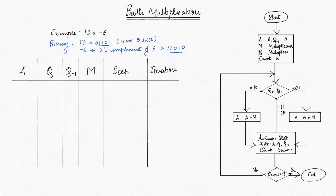The process of Booth's algorithm is represented in iterations, which is shown in a table. We will stop the iterations of the algorithm when the number of iterations is equal to the maximum number of bits, which is 5 here.